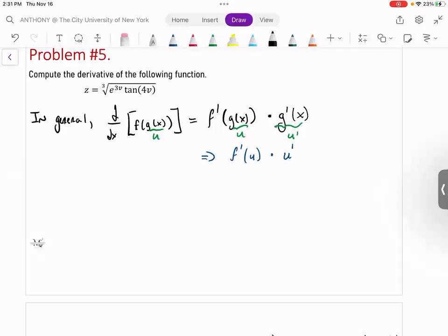So first thing that you can do with this problem here is just do a quick rewrite. You can rewrite it using fractional or rational exponents. So we should have e to the 3v, tan of 4v inside the parentheses. And the cube root, you can write it as a fractional exponent. What would be the exponent here for cube root? One third. One third. Good.